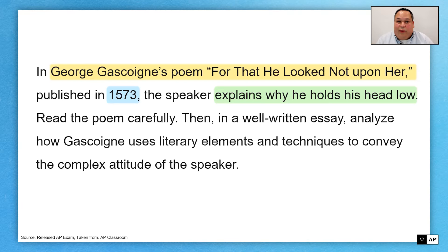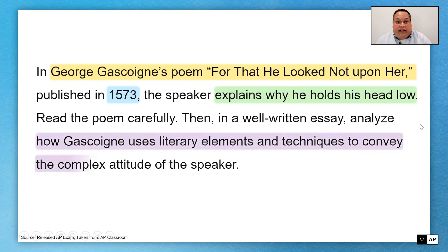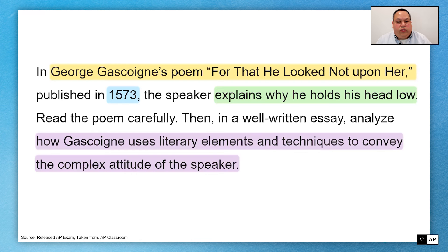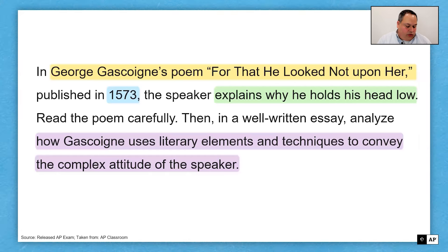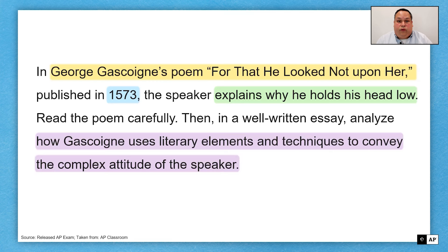We haven't read the poem yet and we don't have these answers, but we're building questions — building filters through which we're going to process our reading. All of this will add up to our task, which is given at the end of the prompt. We have to write an essay analyzing how Gascoigne uses literary elements and techniques to convey the complex attitude of the speaker. We should read the prompt carefully, because it provides fodder for thought and analysis, not throwaway information.